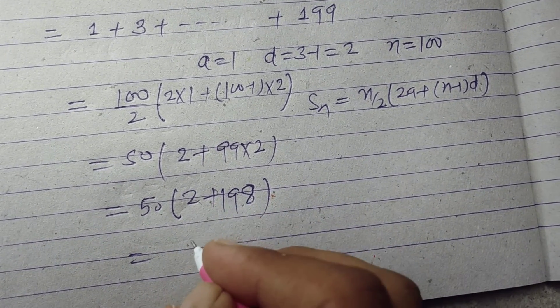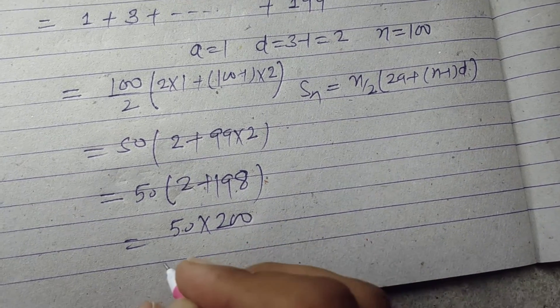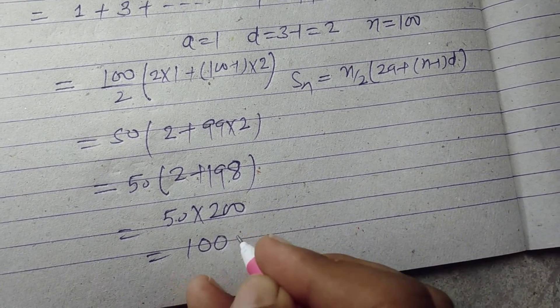So 198 + 2 equals 200. 50 times 200 equals 10,000.